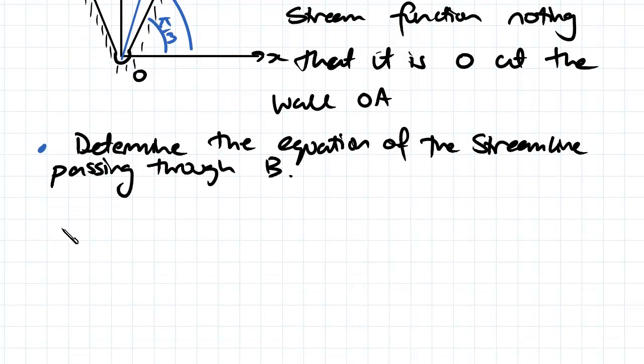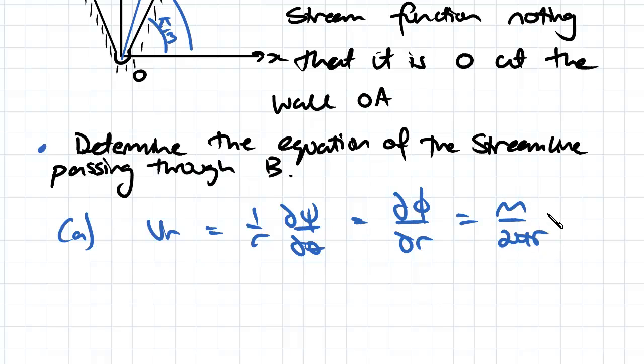Let's work out this first question here, the equation of the streamline. What we know already is that our radial velocity is equal to 1 over r times the partial derivative of our stream function in terms of theta. This gives us a relationship to relate our stream function to our velocity, which we can also relate back to our velocity potential function, which we already know is equal to m over 2π r.